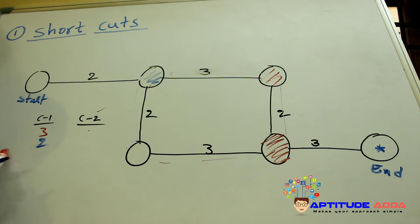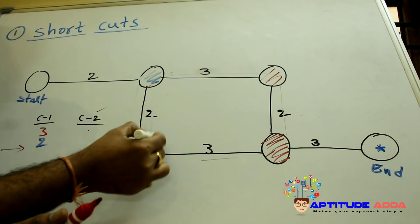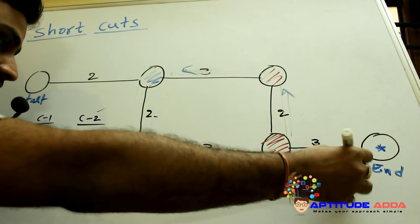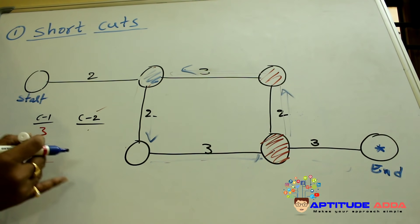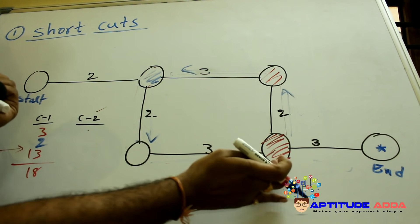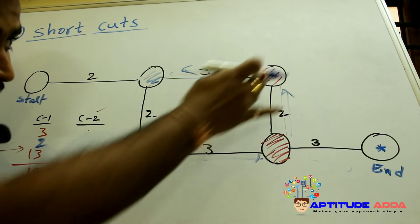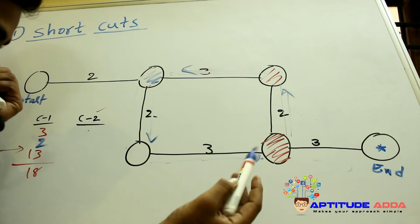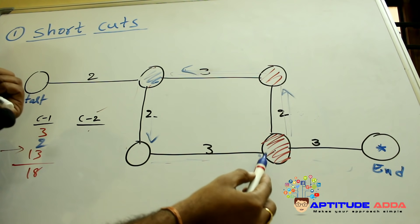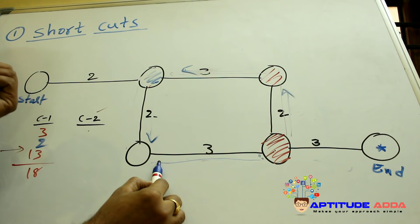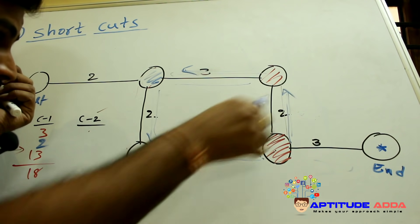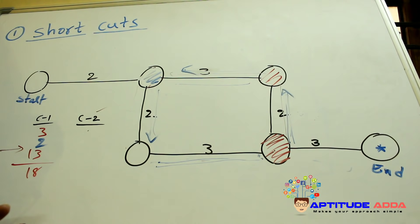Calculating the total: two plus three plus two equals approximately 13 units in one path. Trying another arrangement: three plus two plus three gives about 15 units. Trying various paths, 18 units total appears as one result. After checking all combinations, 18 units is reached in case one.